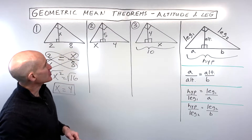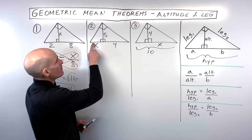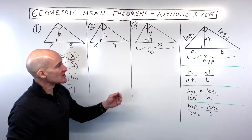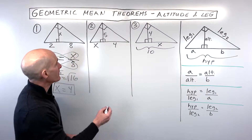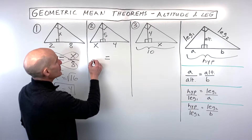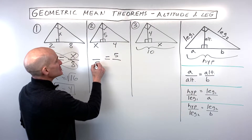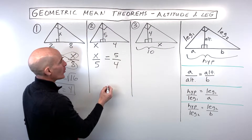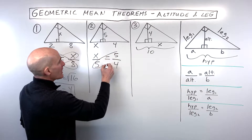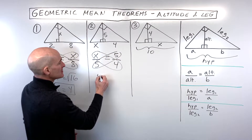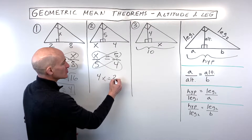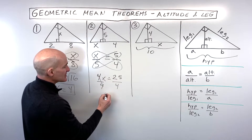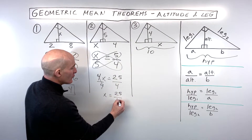For example number two, we're solving for a part of the hypotenuse, and they're giving us the altitude. We can still use the altitude geometric mean theorem. Altitude five is the geometric mean of the two parts of the hypotenuse: x and four. Doing the cross product gives us four times x equals 25, and dividing both sides by four gives x equals 25 fourths.